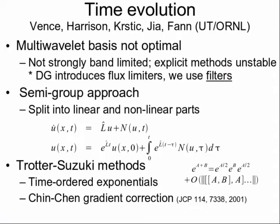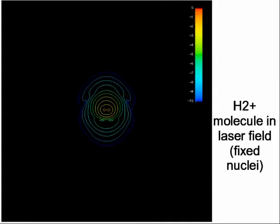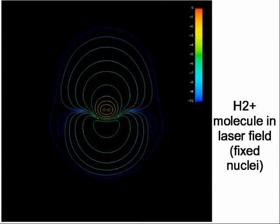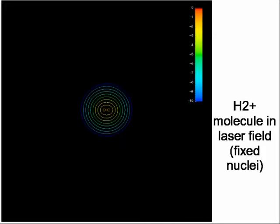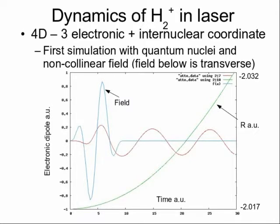We're not just interested in static problems — time evolution is of course very important. This is some work of Nick Vance in collaboration with Frederick Christick, a physicist at Oak Ridge, and Jun Jia, a mathematician at Oak Ridge. Although multi-wavelet bases are very suitable for lots of problems and very computationally convenient, for time evolution they present some challenges that we've successfully overcome. Here you can see a little movie of a small molecule — this is a 2D slice from a 3D simulation showing how MADNESS can predict the time evolution. The scale here is a log 10 scale, so we can see we can span 10 orders of magnitude in the accuracy of the result. Here's the same molecule now being simulated in 3D, coupling to the 3 electronic degrees of freedom and an additional quantum degree of freedom describing the nuclear motion.